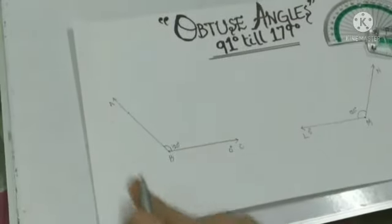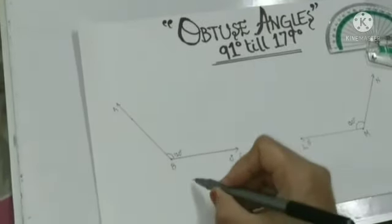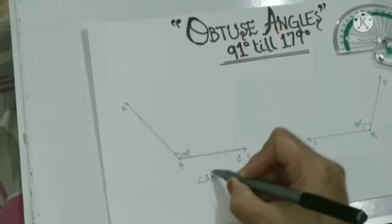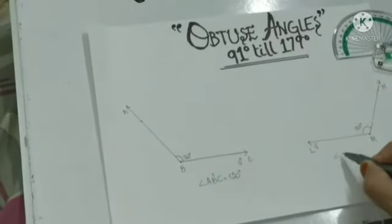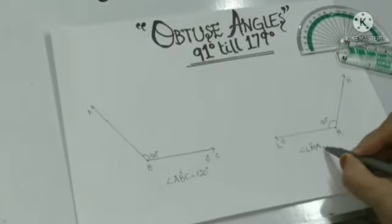Now I have named this angle ABC and this is LMN. And now you will write it. Angle ABC is equal to 120 degrees. And this is angle LMN is equal to 120 degrees.